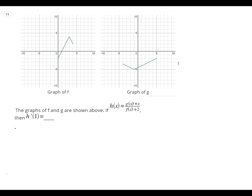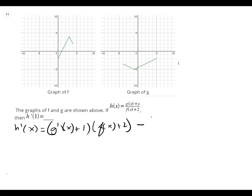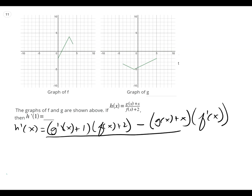So, h prime of x equals... derivative of my red is h prime of x plus one. My green original, f of x plus two. Subtraction. And then my red original, plus x, and then my green derivative, which is f prime of x. Plus two goes away because the derivative of a constant is zero.